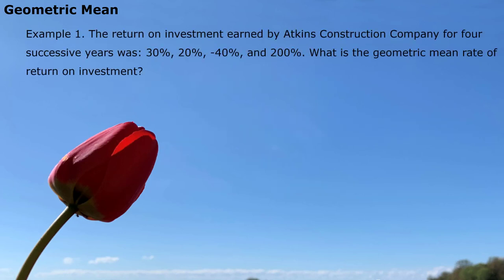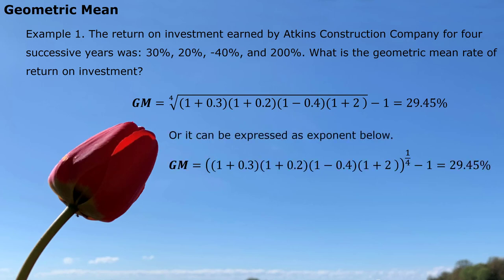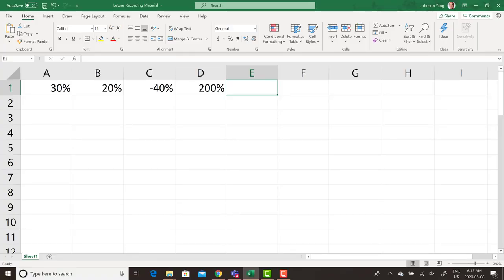Here is an example. The return on investment earned by Atkins Construction Company for four successive years was 30%, 20%, negative 40%, and 200%. What is the geometric mean rate of return on investment per year? We apply all this data into the geometric formula. So this is geometric mean. Give us the answer, 29.45%.